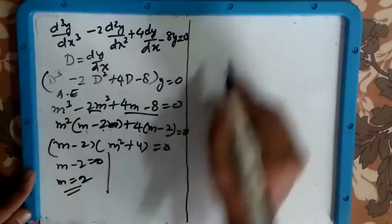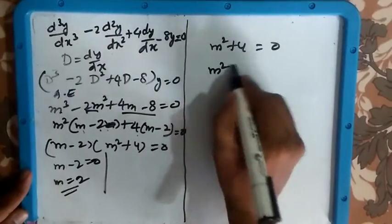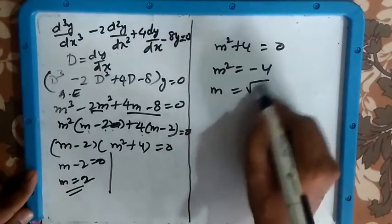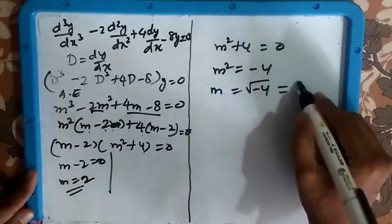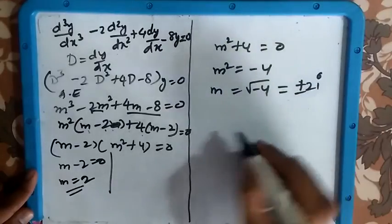Another value is m² + 4 = 0. M² = -4 where m = √(-4) which is nothing but ±2i. So which is imaginary roots.